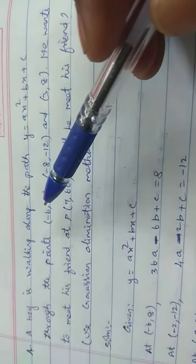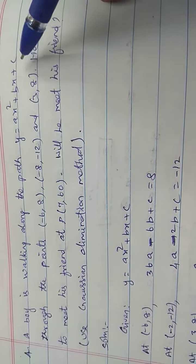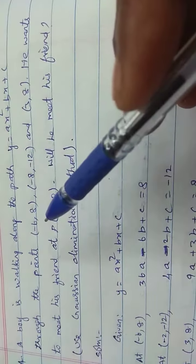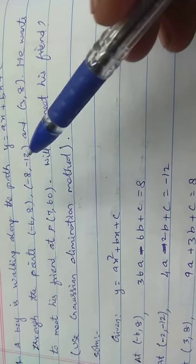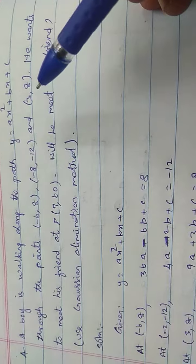A boy is walking along the path y equals ax squared plus bx plus c, through the points (-6, 8), (-8, -12), and (3, 8).